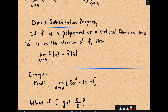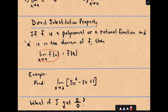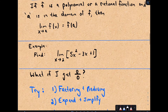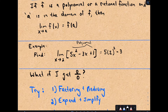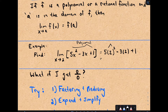There's something important called the direct substitution property. It says if f is a polynomial or a rational function — and this extends to other functions as well — and the value a is in the domain, then to find the limit as x approaches a, just plug a into the function. For example, the limit as x approaches 2 of 5x² - 3x + 1: this is a polynomial, continuous everywhere, so I plug in 2. I get 5(2²) - 3(2) + 1 = 20 - 6 + 1, giving a limit of 15.